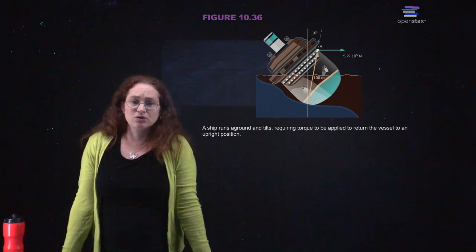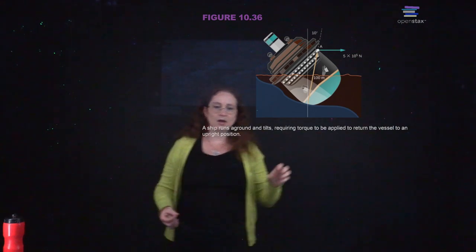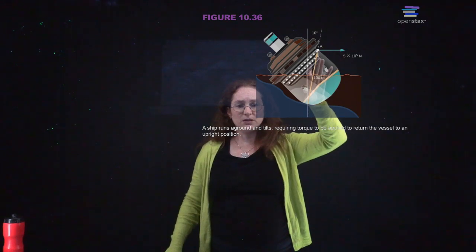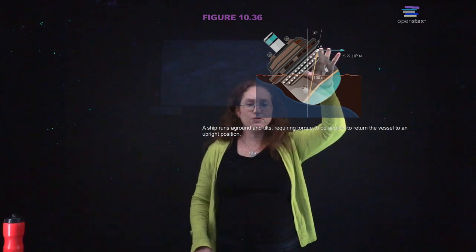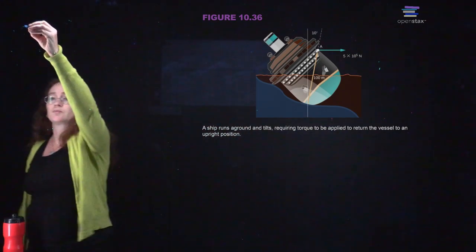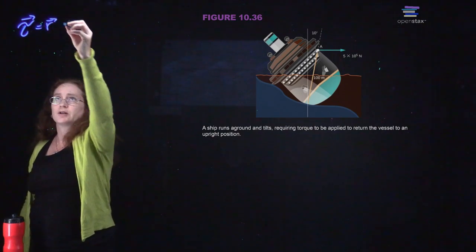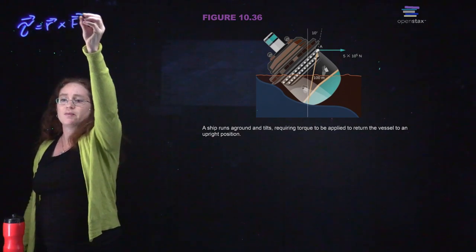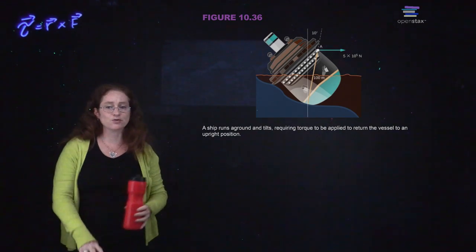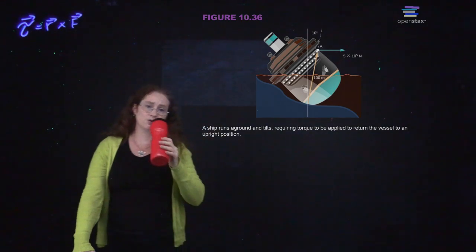A ship runs aground and tilts, requiring torque to be applied to return it to an upright position. Rotating it about this point, the torque is larger if the moment arm is larger for the same force. So you don't have to apply as much force if you apply it further out.